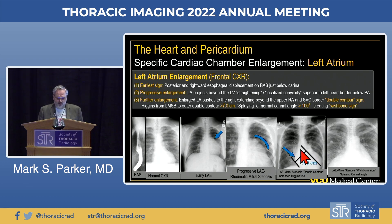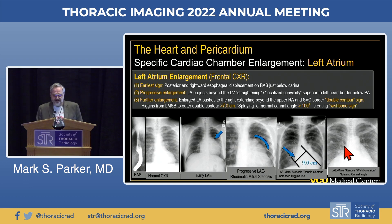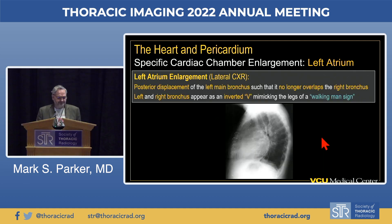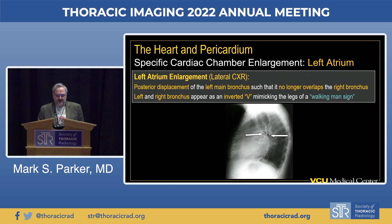Applying Higgins' rule, draw a line along the inferior margin of the left main stem bronchus to the outer margin of the double density; if it's over 7 centimeters, it's indicative of left atrial enlargement. On the frontal examination with aggressive enlargement, we see splaying of the normal carinal angle creating a wishbone sign—or as some say, a bow-legged cowboy sign. On the lateral, posterior displacement of the left main bronchus causes the left and right bronchi to appear as an inverted V, referred to as the walking man sign.